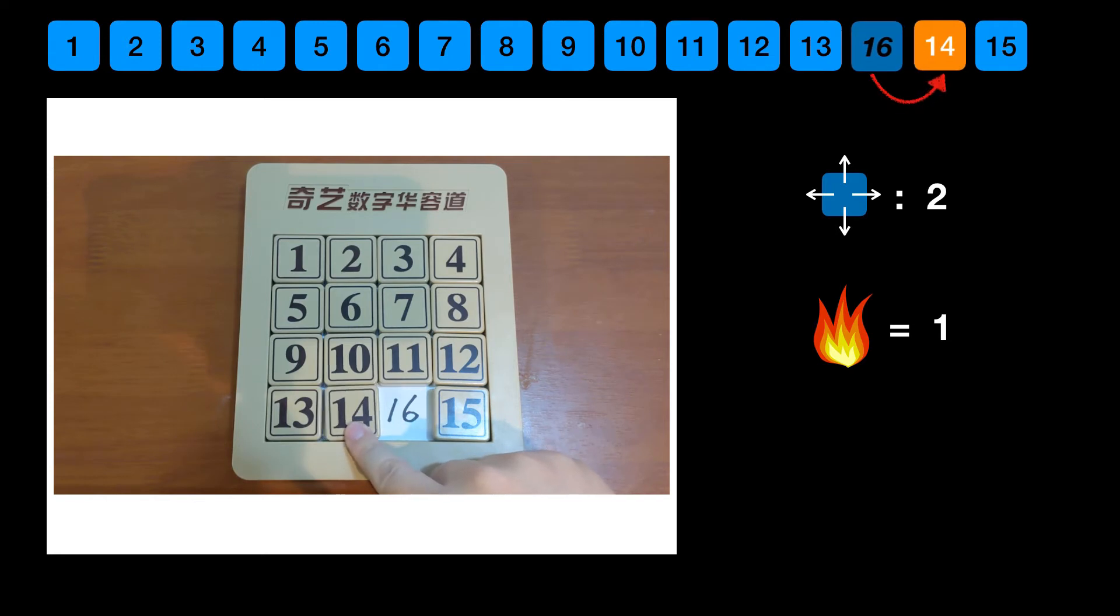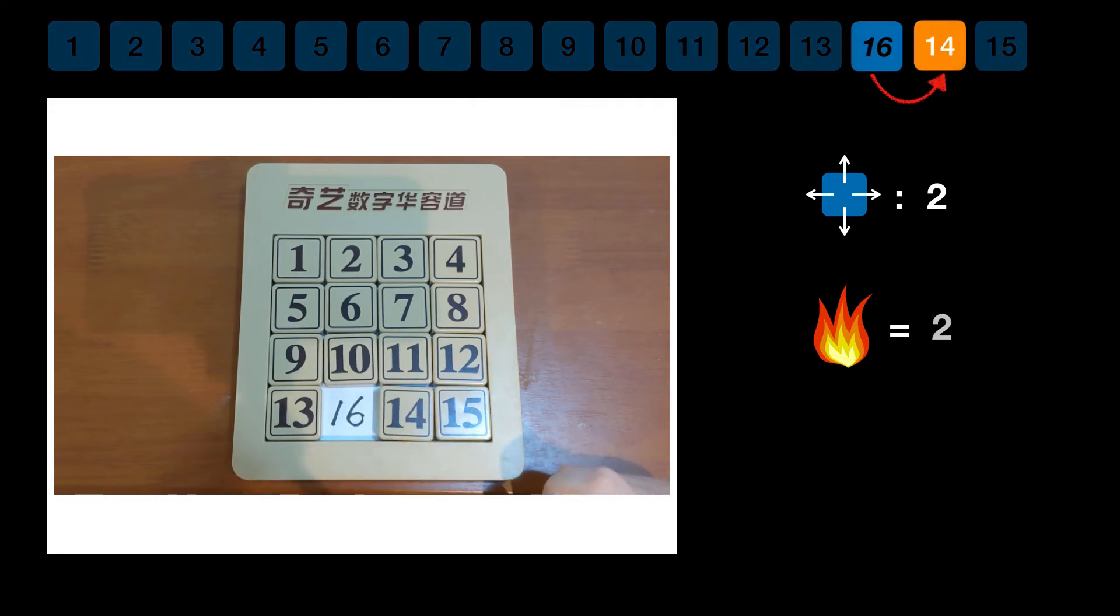If 14 slides to its right, which means swapping between 14 and 16. Now 14 gets mad, so the rage plus 1. 15 has been made angry by 16, so its rage doesn't change. And for those before 13, their order remains the same, so their rage don't change. Therefore the total rage is 2.